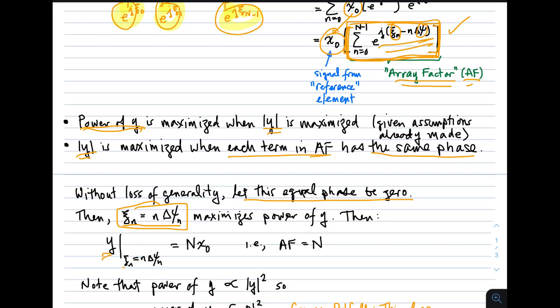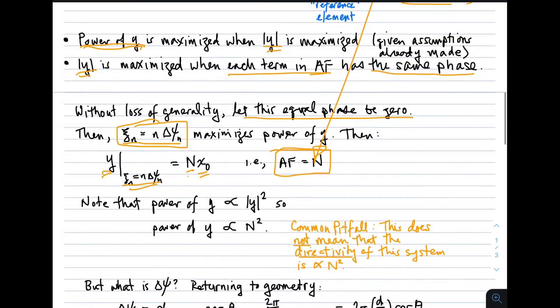So if we do that, y, under this choice for the phase shifts, gives us simply n times the signal at the reference element. In other words, the array factor for this particular choice of phase shifts is n, just the constant n. This sum reduces to n, the number of elements in the array. Note that the power of the beamformer output is proportional to the magnitude squared of the output. So the power at the output of the beamformer is going to be proportional to n squared. It's just the array factor squared. So the power at the output of the beamformer, using this scheme that we've just described, phase-only beamforming, maximizing power, equal gain combining, whatever you want to call it, gives us something which is proportional to n squared.